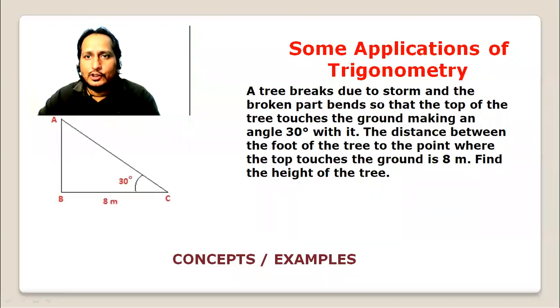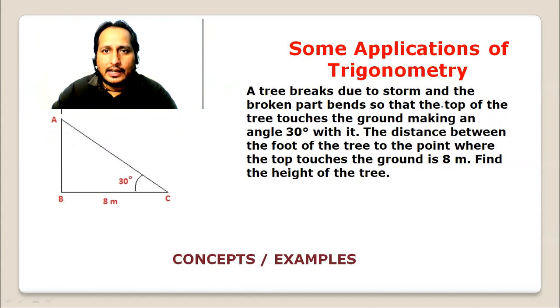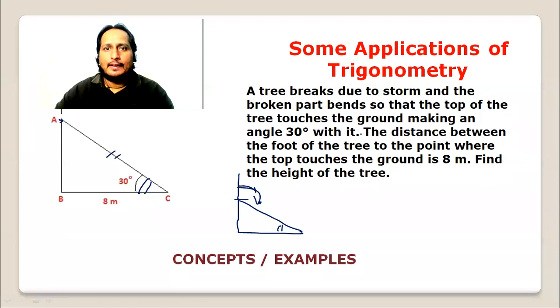A tree breaks due to stone. The broken part bends so that the top of the tree touches the ground with an angle 30 degrees. The distance between the foot of the tree to the point where the top touches the ground is 8 meters.